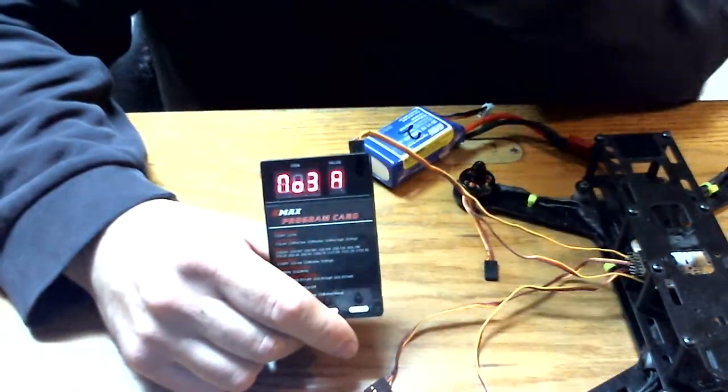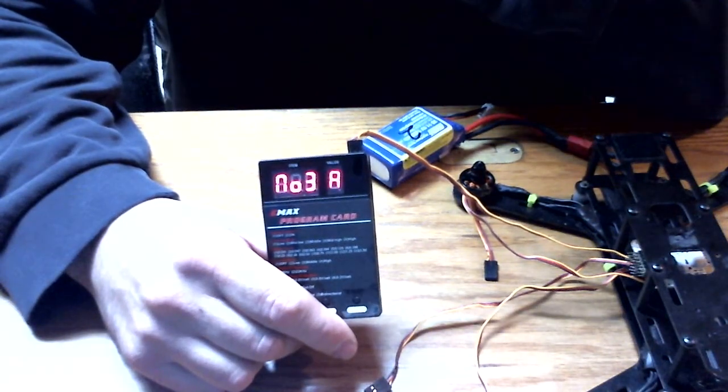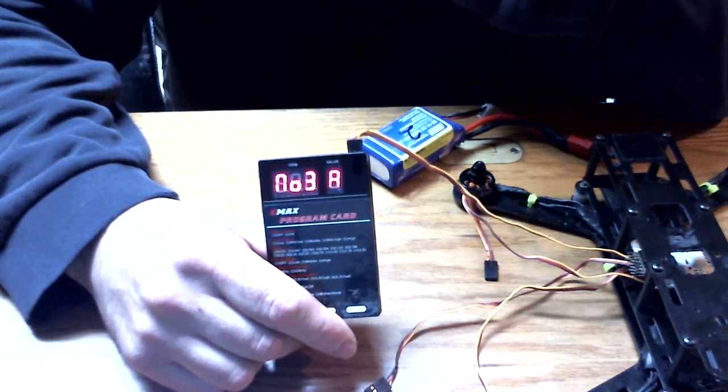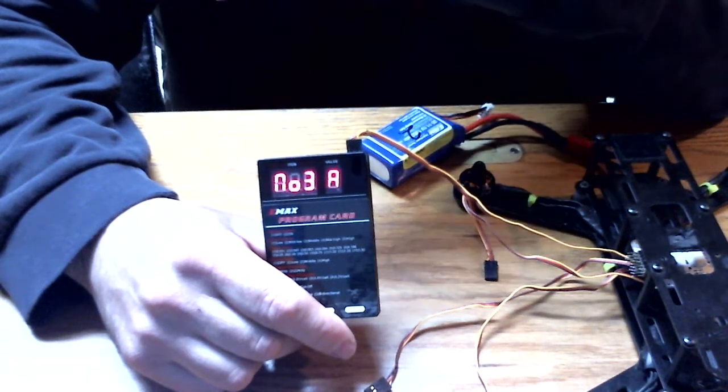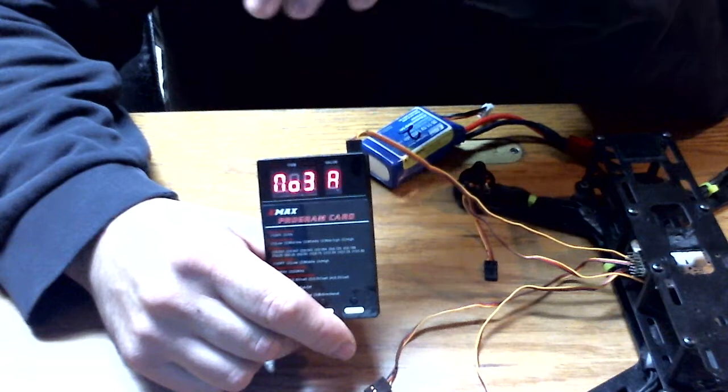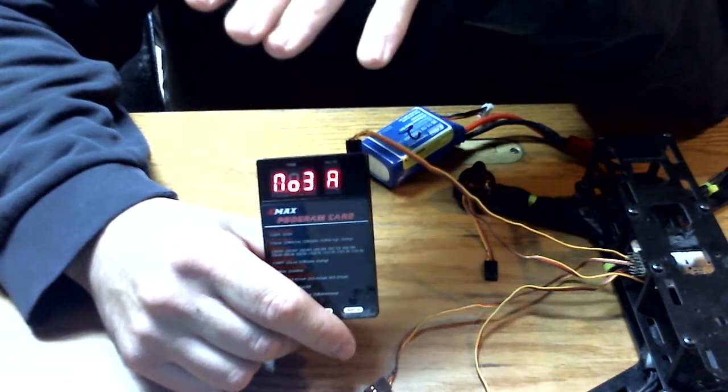Number three is your start force. There's 13 different options. It goes one through nine, and your default is number 10, which is 0.75. That's what I'm at, and it shows up on the card as an A, not as a 10.